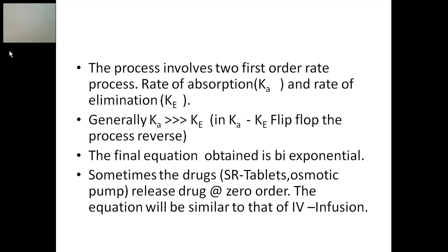Most of the equations seen so far are mono-exponential — for example, C = C₀·e^(−Ke·t), where there is only one exponential term involving Ke, as seen in IV bolus and IV infusion. However, in extravascular administration with absorption rate kinetics, the equation will contain both e^(−Ka·t) and e^(−Ke·t) — making it a biexponential form — since both processes follow first-order rate kinetics.